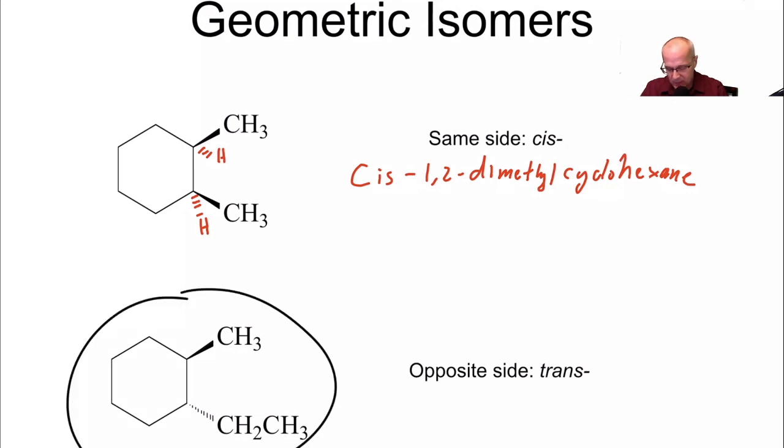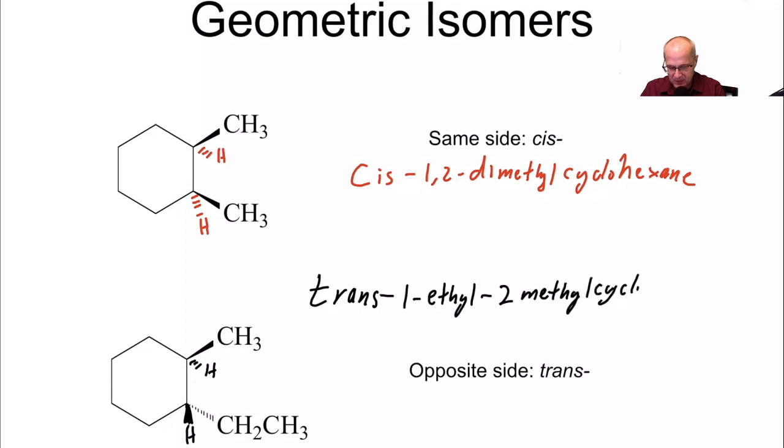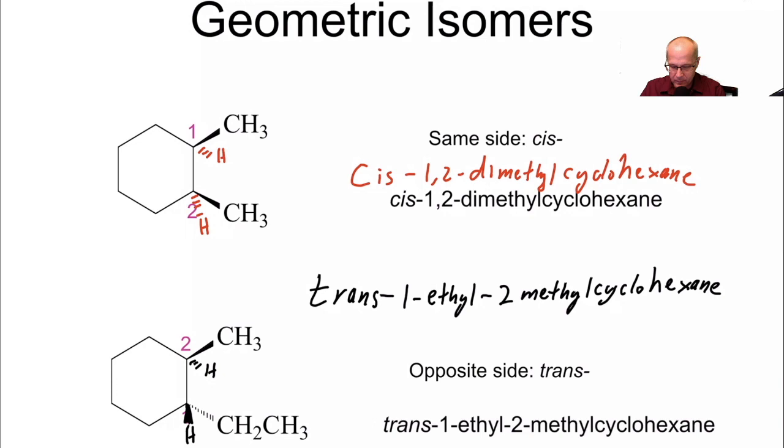All right? Now, this one here, this bottom one, that one is 1-ethyl. Oh, pardon me. Excuse me. This is a trans. Now, let's see why. There's a hydrogen here, and then there's a hydrogen here. So, the hydrogens are on opposite sides. So, this is a trans situation. 1-ethyl-2-methylcyclohexane.